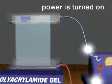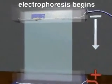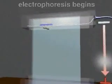In an electric field generated by a power supply, the negatively charged polypeptides migrate through the gel toward the positive electrode at the bottom of the gel.